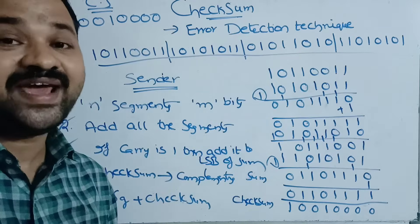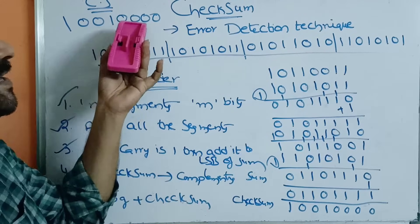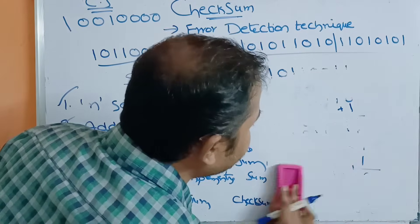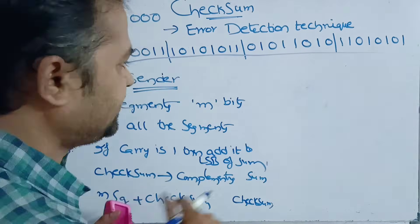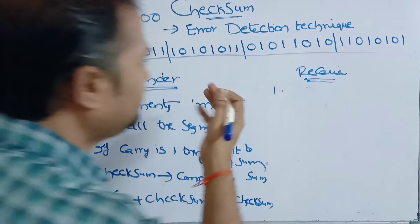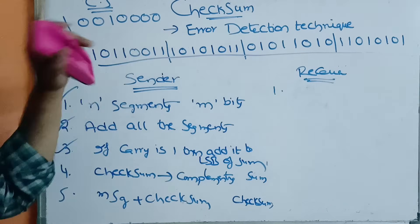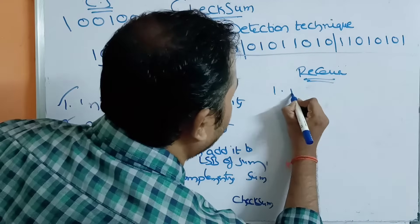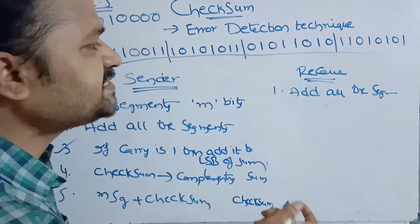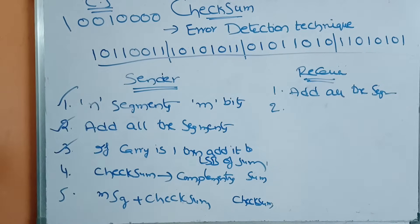At the receiver side, we have 5 segments. These 4 segments are nothing but the message, whereas the 5th segment is the checksum. So the receiver receives the entire message with 4 segments as well as the checksum.